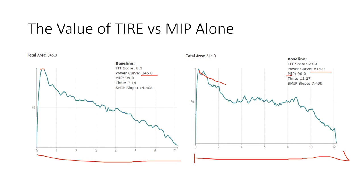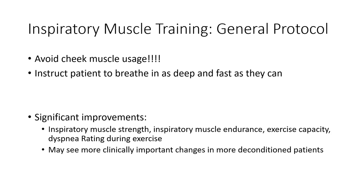After assessment, if a patient has weakness, we may prescribe inspiratory muscle training (IMT). IMT can improve endurance and exercise capacity. It's probably most useful for deconditioned patients who demonstrate inspiratory muscle weakness. Physically active individuals already work their breathing muscles during exercise. For an athletic population it may offer marginal gains, but for patients with weakness it's a pretty powerful tool — and they can do it anywhere.